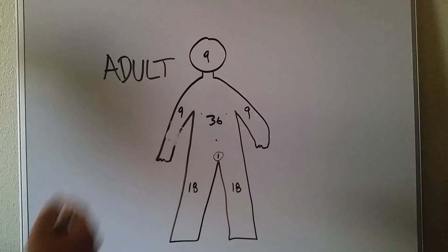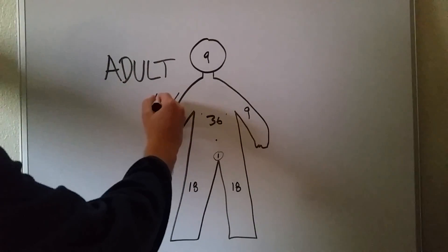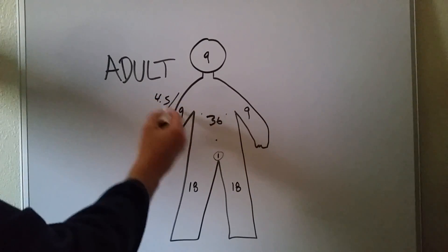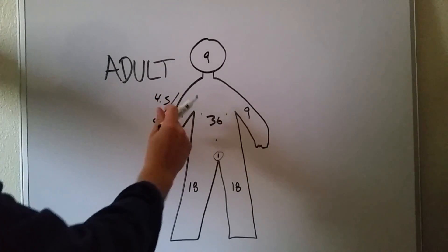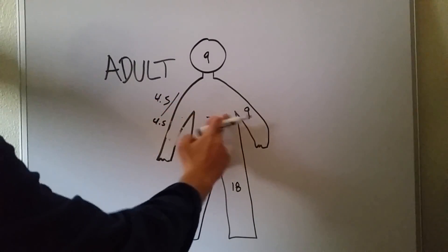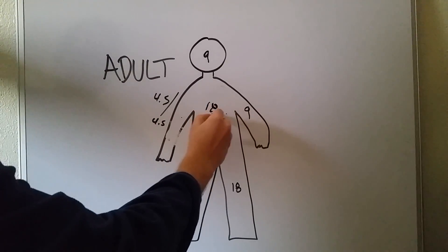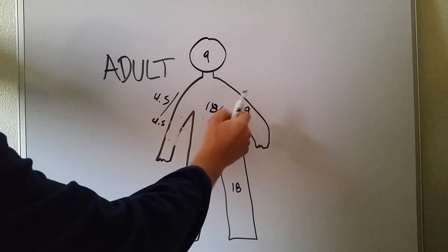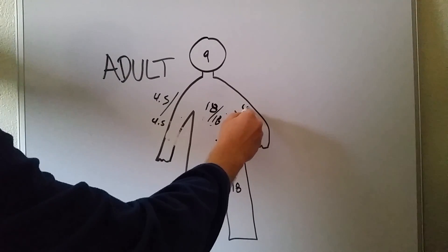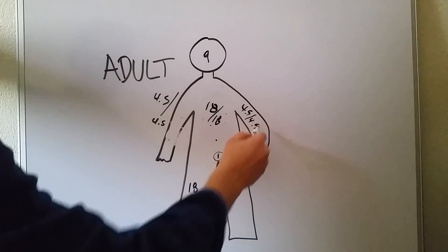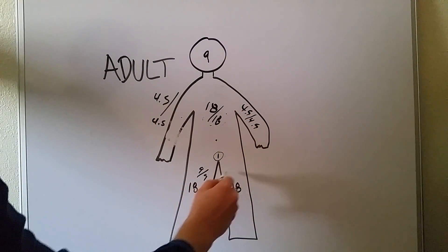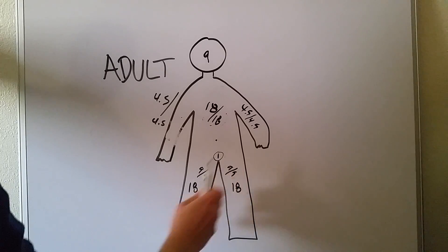If you want, I'll kind of write up here what half this would be for people that don't want to divide. So that each side would be 4.5, 4.5. Each side of the torso would be 18, 18, 4.5, 4.5, and then 9, 9 for both of these guys. Right?